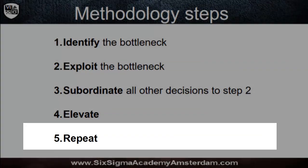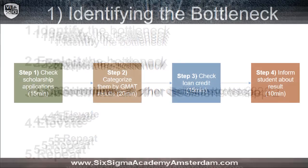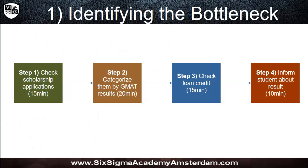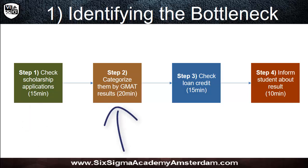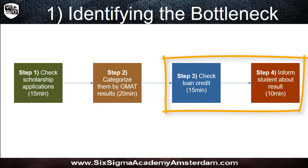Let us have a look at the following example, which takes you through all the steps. We have a process for checking whether a student at a university is entitled to a scholarship or not. Step one is checking the scholarship application — it takes 15 minutes per student. Step two is to categorize the applications by GMAT results. The GMAT is something like an IQ test, but specially designed for business studies, and it takes 20 minutes per student. Step three and step four conclude the process, and the times mentioned are the times needed per application.